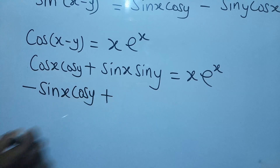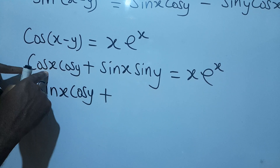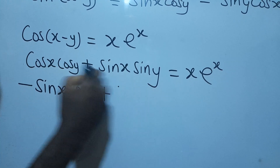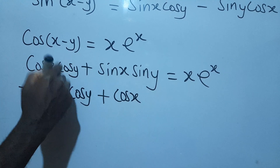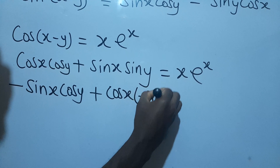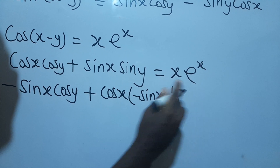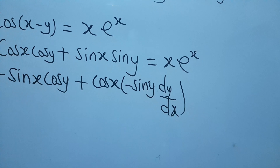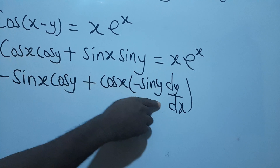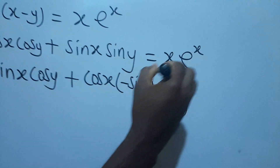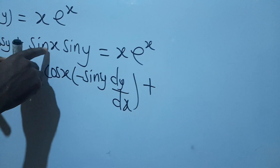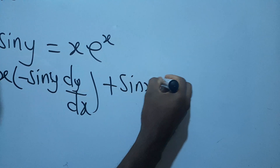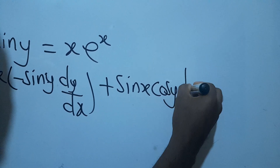So I get negative sin x·cos y. Then keeping cos x and differentiating cos y, I get negative cos x·sin y·dy/dx, since this is implicit differentiation. Now for the second product, I keep sin x and differentiate sin y, giving sin x·cos y·dy/dx.